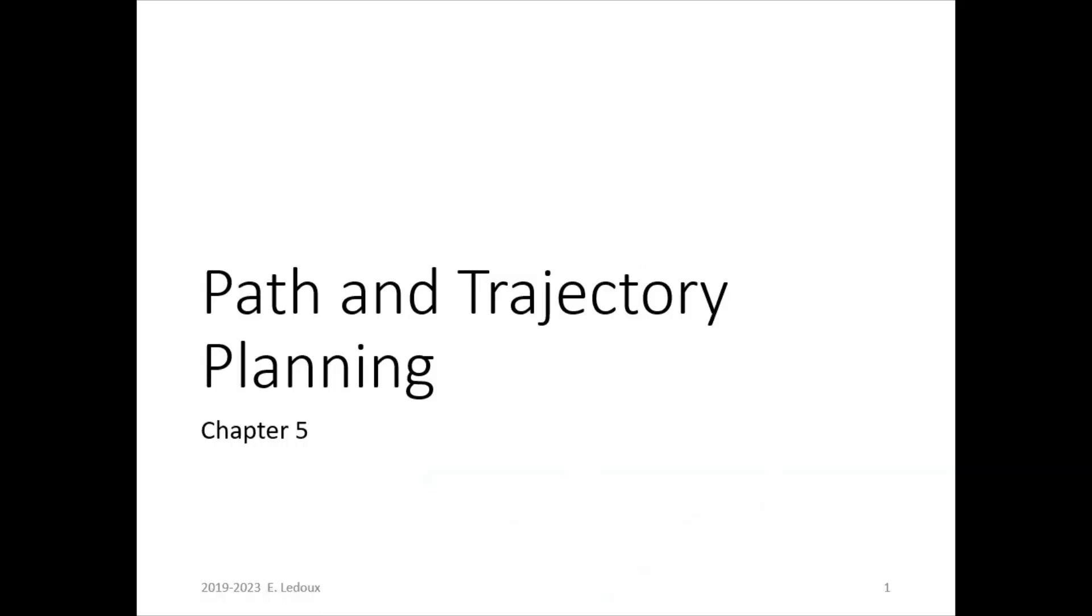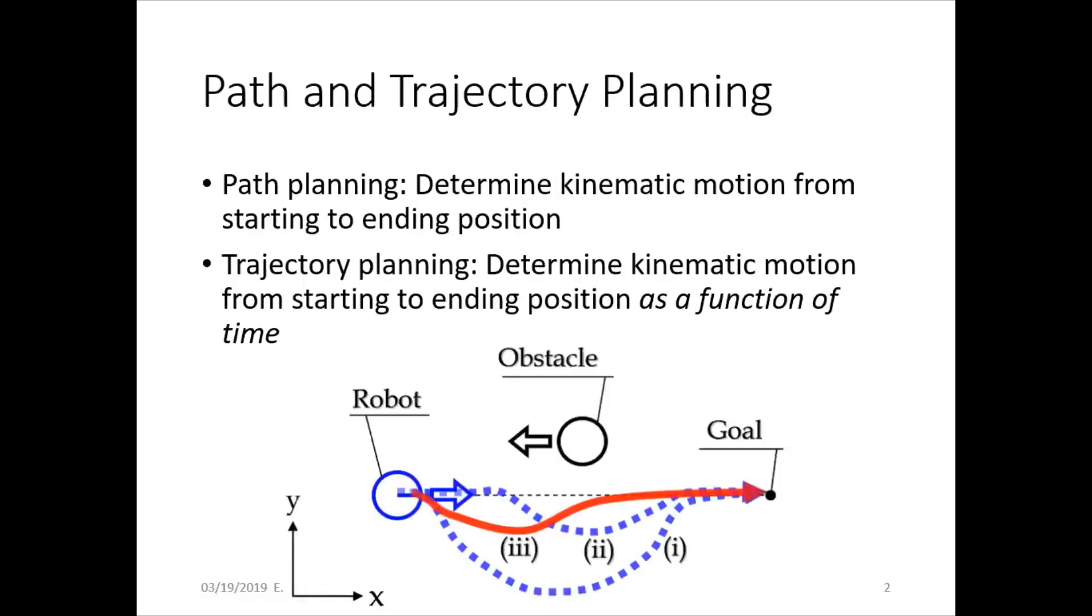Path and trajectory planning are advanced ways to define a robot's motion. Path planning is determining kinematic motion from starting to an ending position. Trajectory planning is similar but includes time, so it will affect velocity and acceleration, whereas path planning is strictly just position.